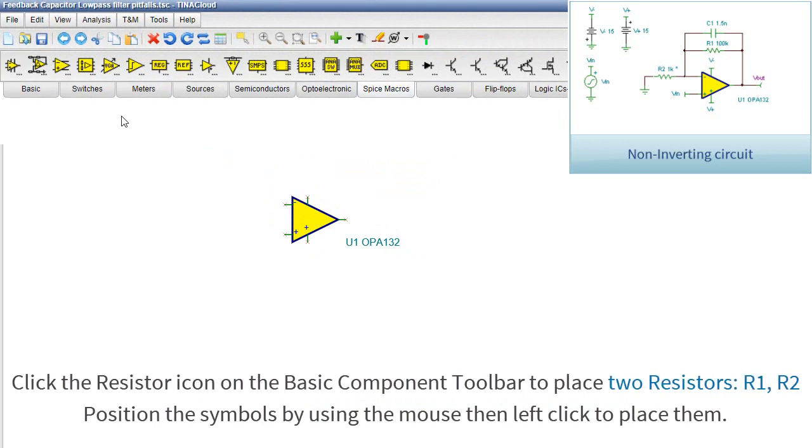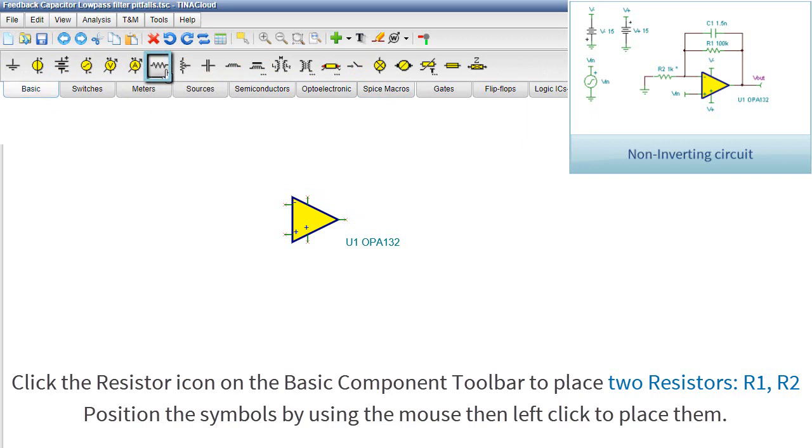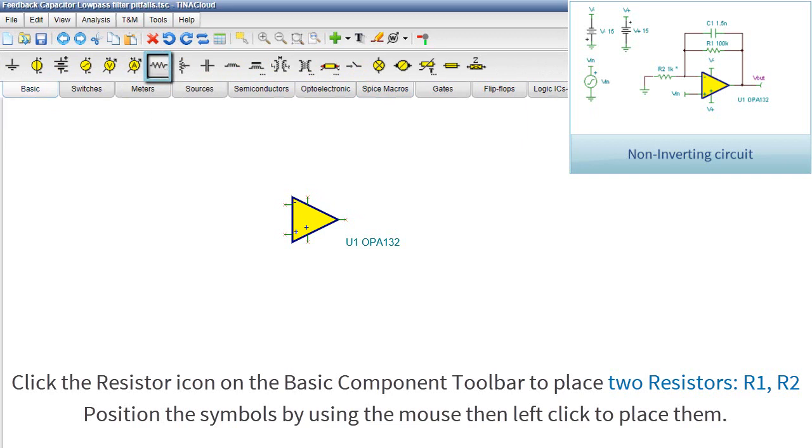Click the resistor icon on the basic component toolbar to place two resistors, R1 and R2. Position the symbols by using the mouse, then left-click to place them.